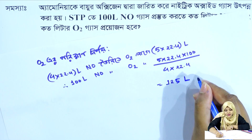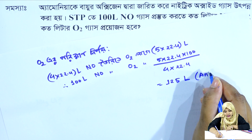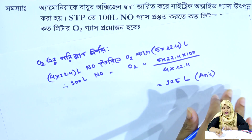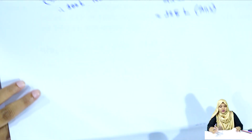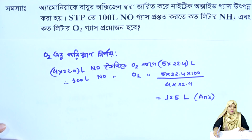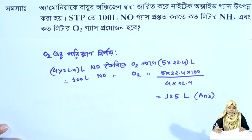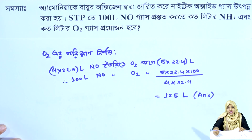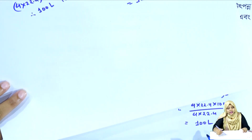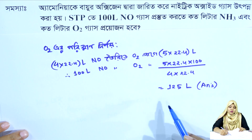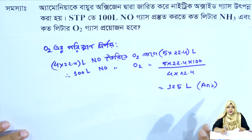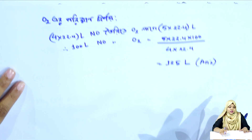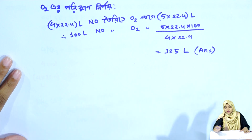So from here we get two answers. The amount of oxygen required is found, and the amount of ammonia can also be calculated. At STP, to produce 100 liters of nitric oxide gas, ammonia required is approximately 100 liters and oxygen required is approximately 125 liters.